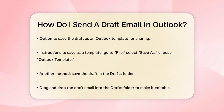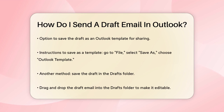However, if you want to keep the email as a draft, you can save it as an Outlook template. To do this, go to the File tab, select Save As, and choose Outlook Template as the file type. Then share this template with the person who needs to send the email.